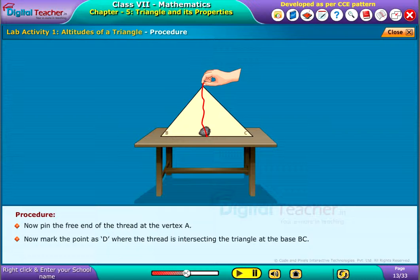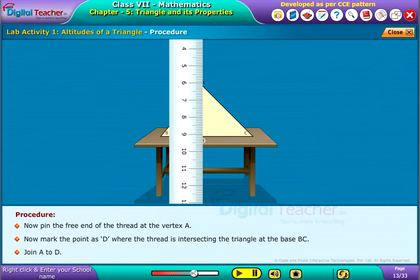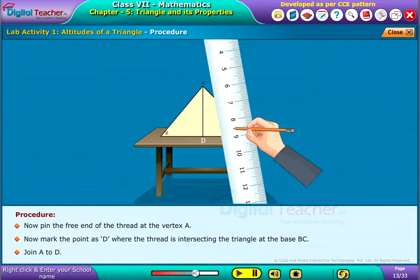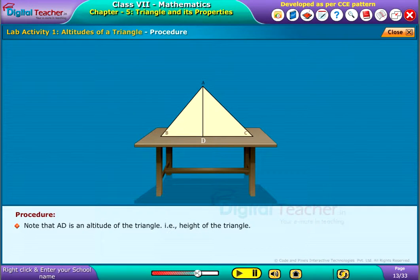Now, mark the point as D where the thread is intersecting the triangle at the base BC. Join A to D. Note that AD is an altitude of the triangle, that is height of the triangle.